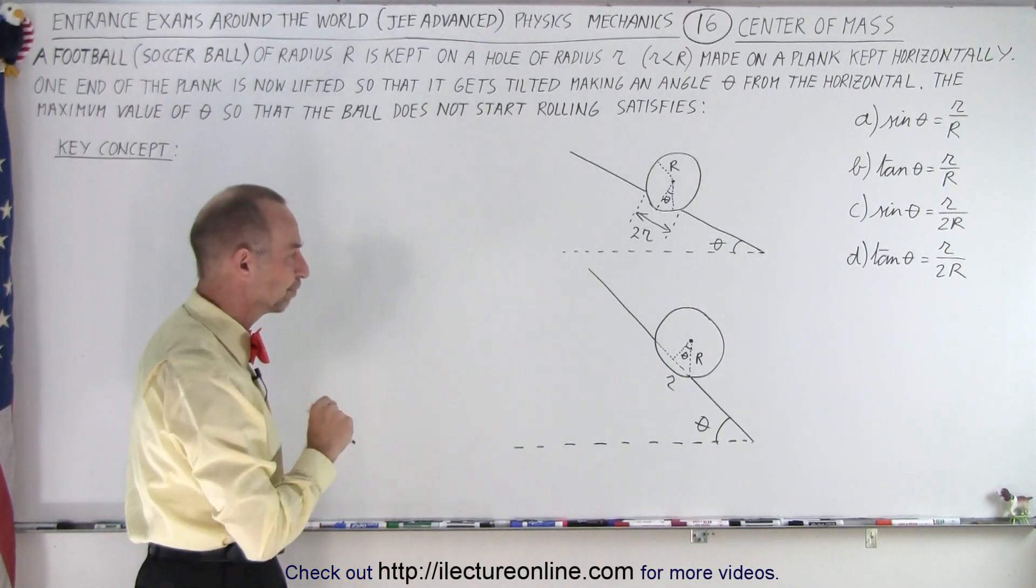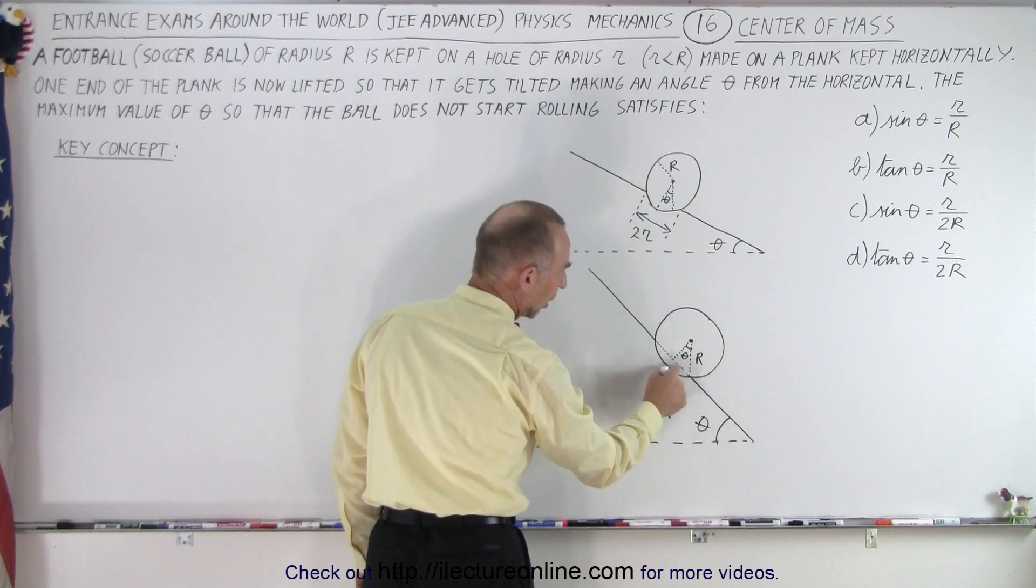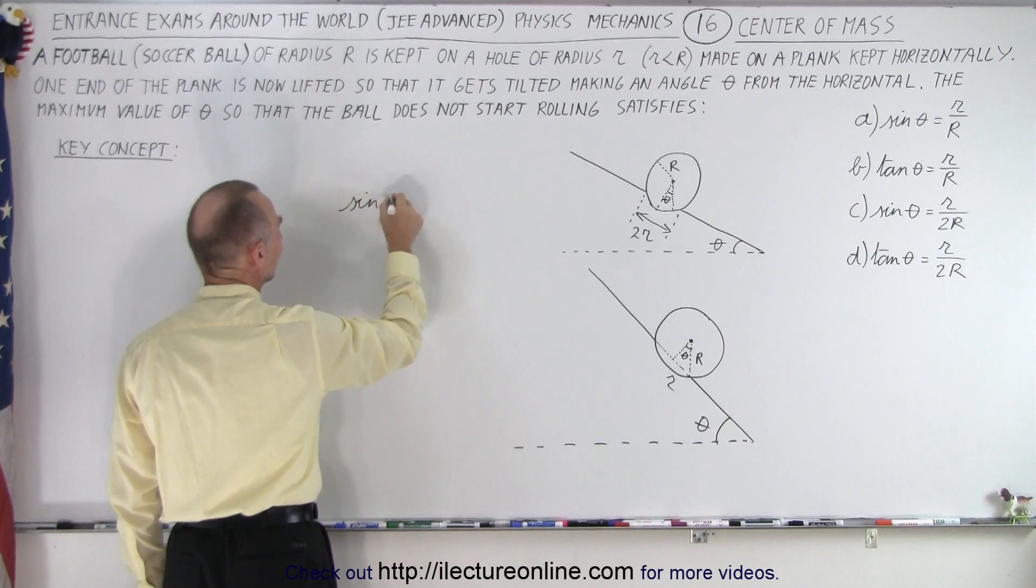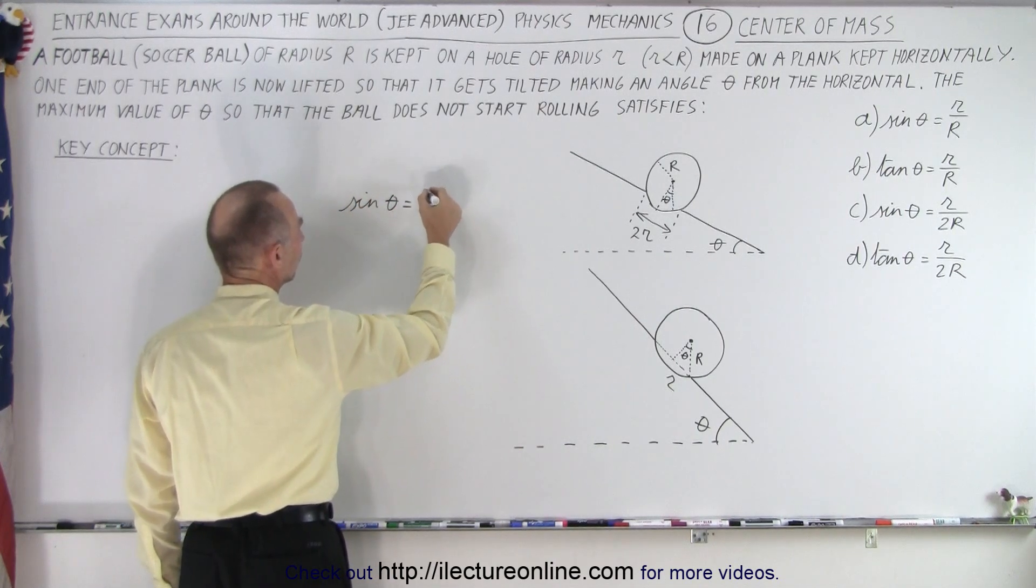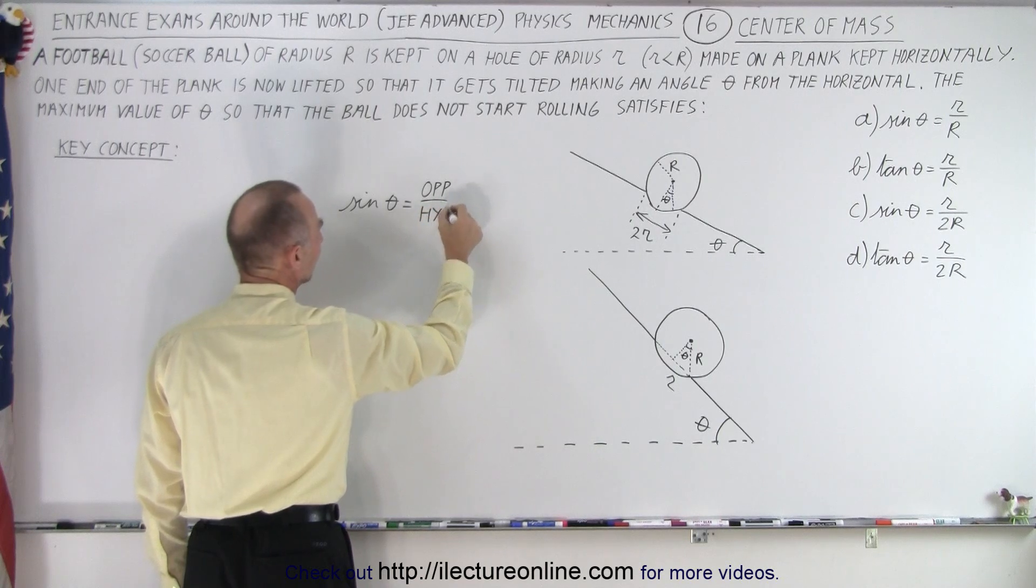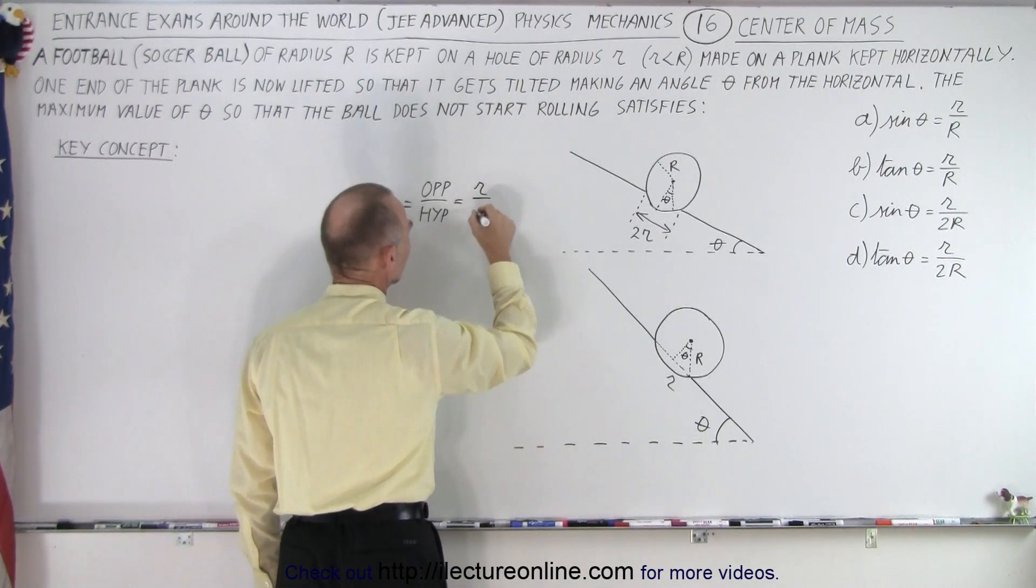Now we have a relationship. Notice that big R becomes the hypotenuse, little r becomes the opposite side, so we can see that the sine of theta, by definition, is equal to the ratio of the opposite side divided by the hypotenuse. Now in this case, the opposite side will be little r, and the hypotenuse will be big R.